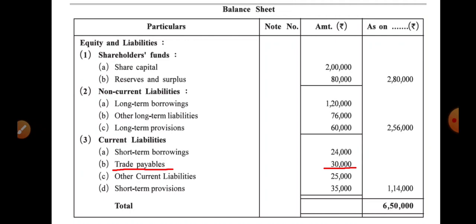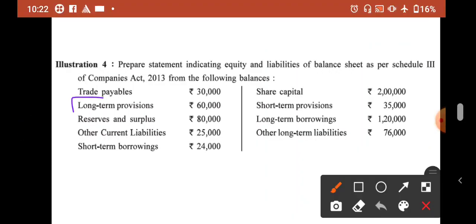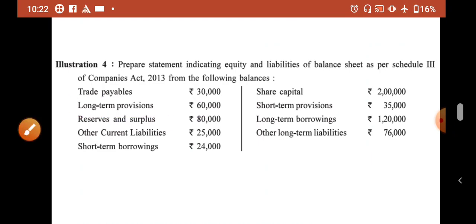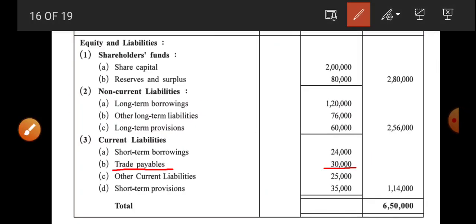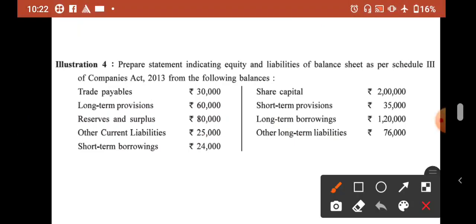This is the data set. After this, we have long term provision — long term provision 60,000. We have long term provision here, long term provision 60,000. In the blank format, you just have to fill in the data.